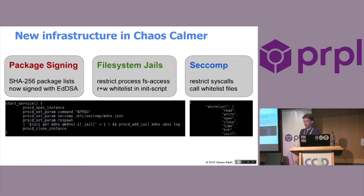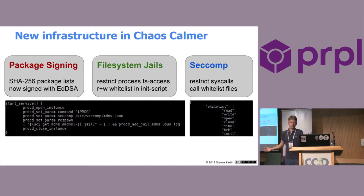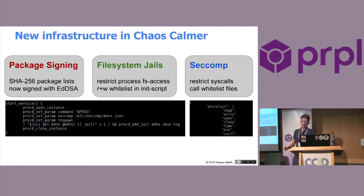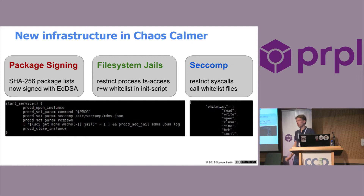There's also seccomp support. You might have heard of seccomp — it's a way to restrict the process in the actual system calls it can call. In a similar manner, you can write a list in a JSON-like format in which you can whitelist all the syscalls that your process should be able to call, and give it to procd. Procd will then use the kernel seccomp feature to restrict the process to only be able to call those syscalls. If you do this for all your processes, this gets you a higher level of security and might be an alternative to real containers in certain use cases.